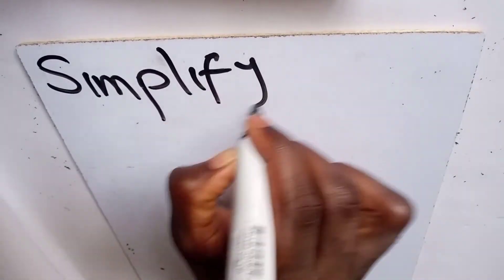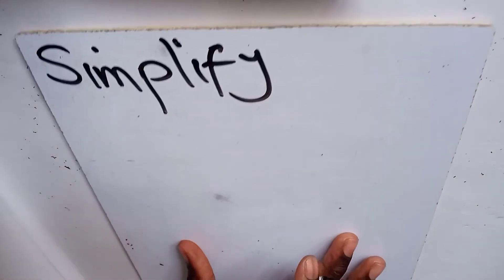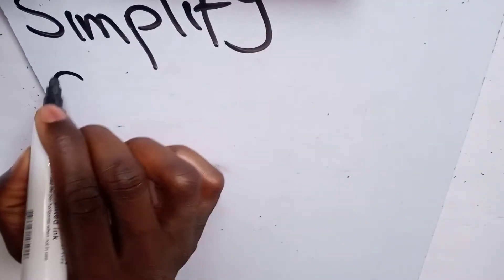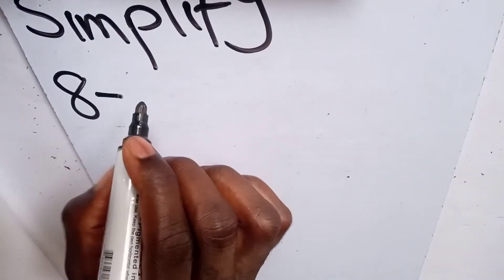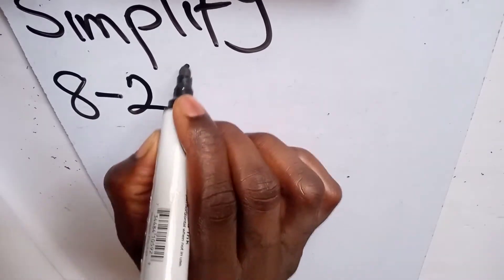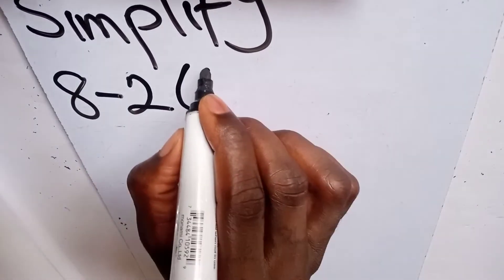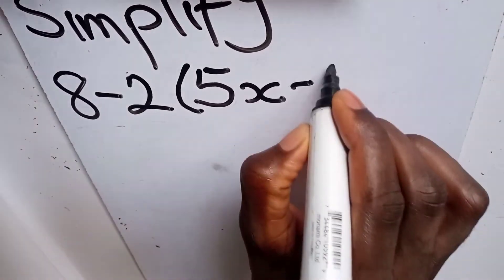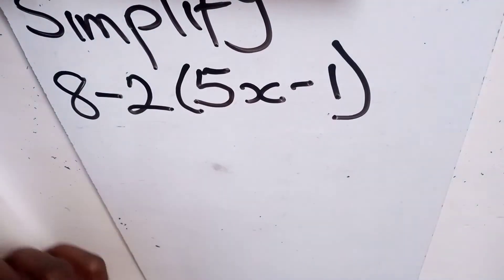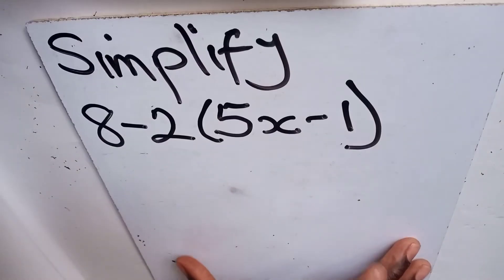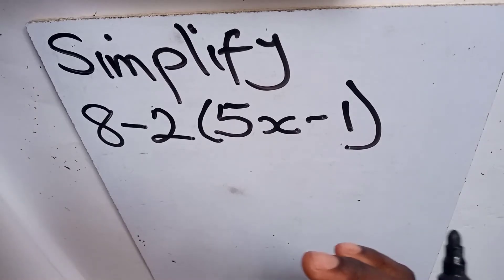Simplify the algebraic expression 8 minus 2 multiplying 5x minus 1. To be able to solve an algebraic expression like this, you first have to expand the brackets.